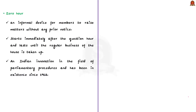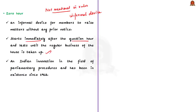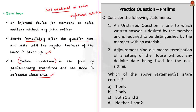Now let us talk about zero hour. Zero hour is not mentioned in the rules of procedures of the houses. Therefore, it is an informal device through which members of parliament raise matters without any prior notice. The zero hour starts immediately after the question hour and lasts until the regular business of the house is taken up. The speciality of zero hour is that it is an Indian innovation in the field of parliamentary procedures and has been in existence since 1962.